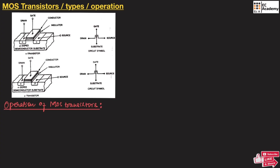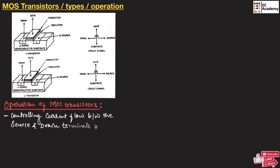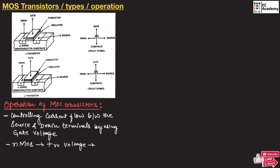The MOS transistor operates by controlling current flow between the source and drain terminals using gate voltage. The current flow between drain and source is controlled by applying voltage across the gate. For NMOS, a positive voltage is applied across the gate, and for PMOS, a negative voltage is applied across the gate.